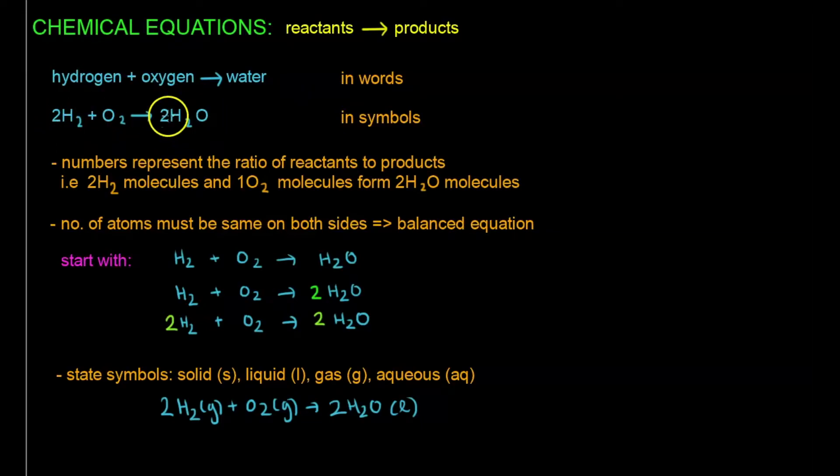But note the numbers here, because they have to match, and you can see that the numbers represent the ratio of reactants to products, i.e., two H2 molecules and one O2 molecule, they will form two H2O molecules. The number of atoms must be the same on both sides, so it will form a balanced equation.